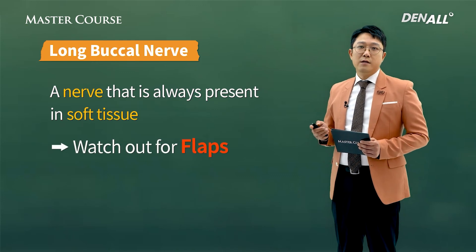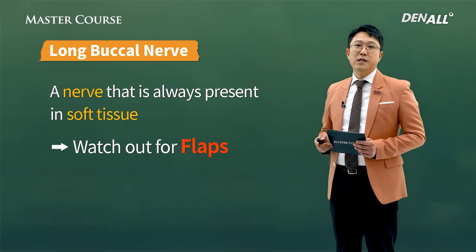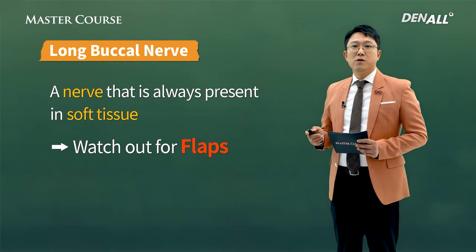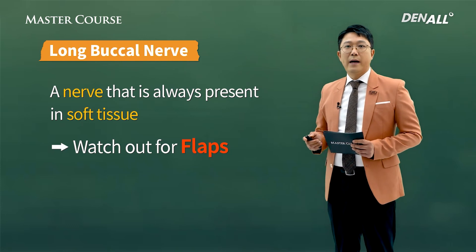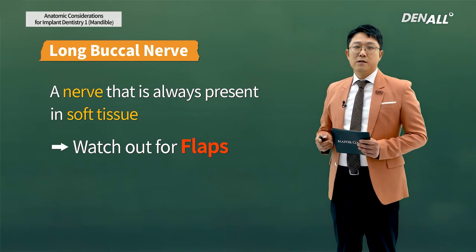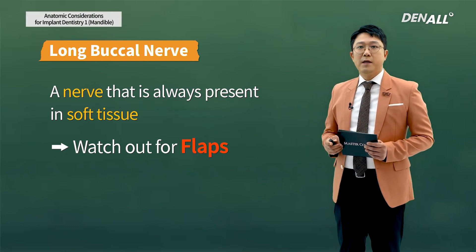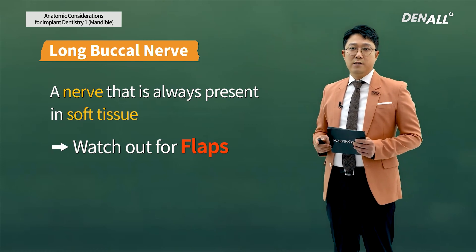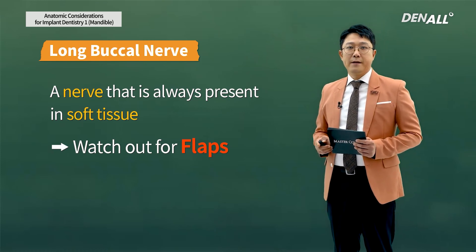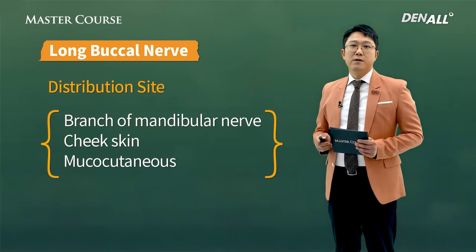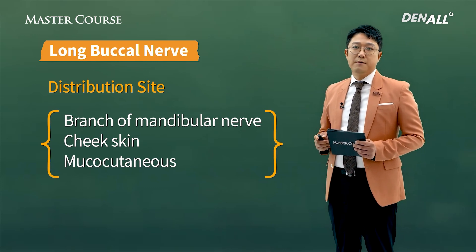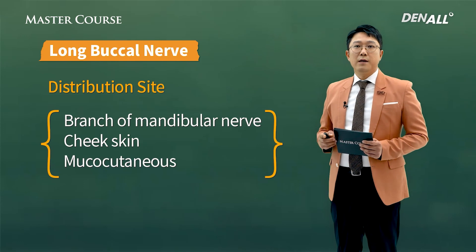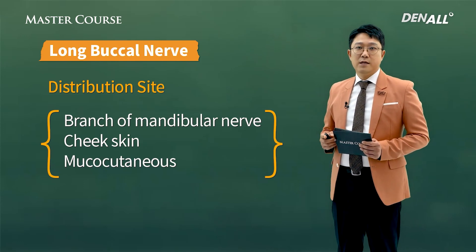The lingual nerve is always in soft tissue, not in bone. It is very close to the alveolar ridge at the lingual side of the third molar. Therefore, great caution is required when making a flap on the lingual side. The lingual nerve is found to be injured more often than the mental nerve according to some reports, so you need to be very careful. The long buccal nerve controls the sensation for the cheek skin and mucosa, and anesthesia of this nerve is used when making a flap in the buccal mucosa.